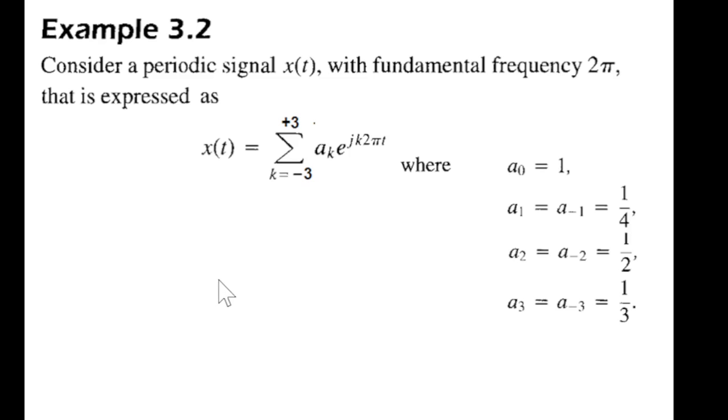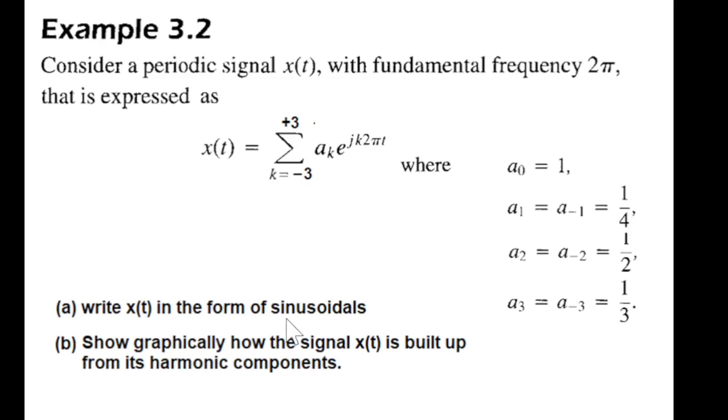Now let's come to the example. Example 3.2: consider a periodic signal x(t) with the fundamental frequency 2π that is expressed as a summation limited from minus 3 to plus 3 of ak e raised to the power jk 2πt, where 2π is the fundamental frequency. The values are given for the coefficient a0, a1, a minus 1, etc.